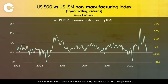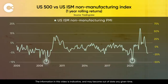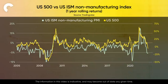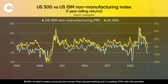The moment of maximum pessimism arrived in 2009 and 2020, when the US ISM service index dropped 12 points from the previous year. Fiscal and monetary stimulus came soon after, which can lead to a stock market recovery. And as you can see, after the fall, the US 500 rebounded.